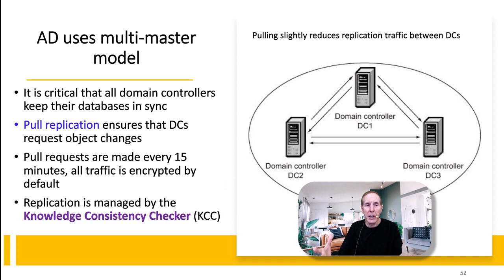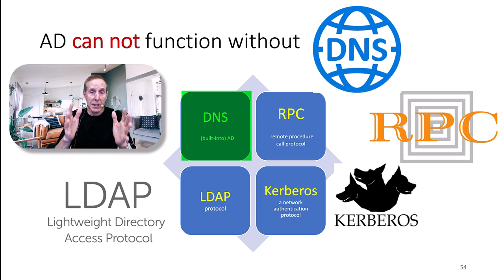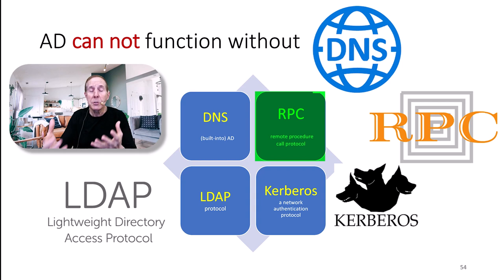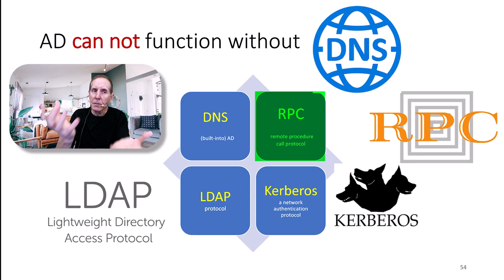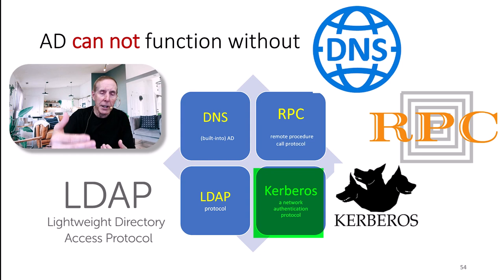Active Directory depends on a number of technologies. DNS is one feature Active Directory cannot function without. RPC — Remote Procedure Call — is a protocol built into Windows used all the time on clients and servers, allowing a process on a server to communicate flawlessly with a process on the client. LDAP is a set of rules — a protocol that allows applications to talk to the Active Directory database. And Kerberos is the authentication method, used to authenticate an individual, computer, or application and trust that they are who they say they are.